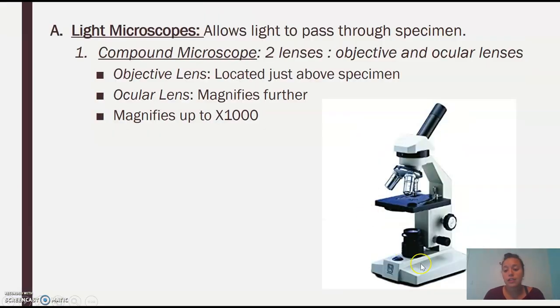So you have two lenses working together to get you what you need. And the light, sorry, the light passes through here. So light passes through your specimen. And you see it through the lenses, the two lenses. So the first one's called a compound microscope.